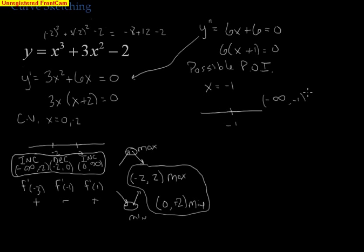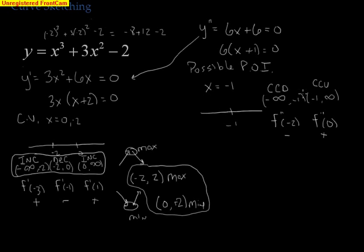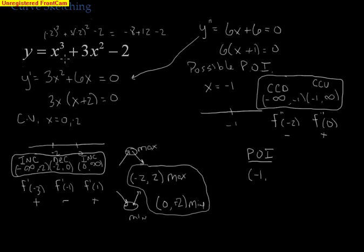The two intervals are negative infinity to negative 1 and negative 1 to infinity. Evaluating the second derivative at x equals negative 2 gives 6 times a negative, which is negative — indicating concave down. Evaluating at x equals 0 gives 6 times 1 equals 6, which is positive — indicating concave up. Since the concavity changes from down to up, the point of inflection is at x equals negative 1. Plugging negative 1 into the original function gives negative 1 plus 3 minus 2 equals 0, so the point of inflection is at negative 1 comma 0.